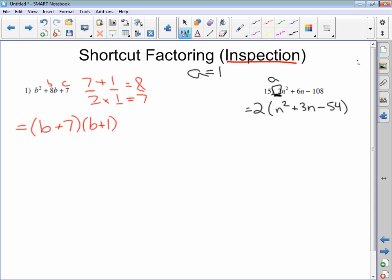Now I can use inspection to factor my trinomial there. That 2 is just going to hang out. It's still part of this, but it's not factoring in. So I want two numbers to add to give me 3, multiply to give me negative 54.